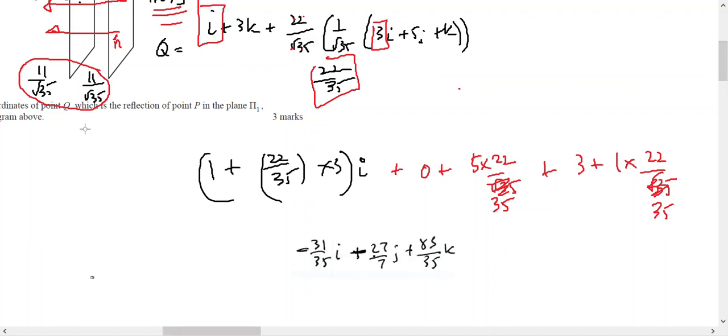So point Q is negative 31 on 35, negative 27 on 7, and 83 on 35.